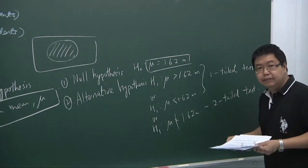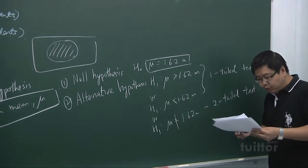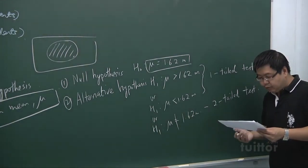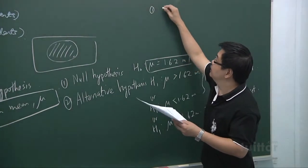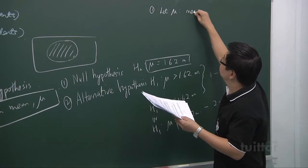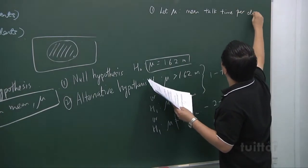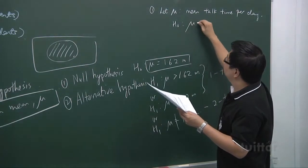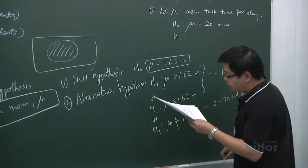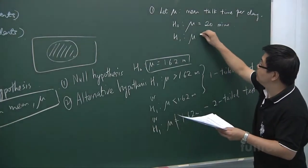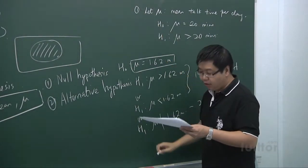Let's look at some examples. Kelly claimed that the average number of talk time used by phone users in Singapore is 20 minutes per day. Test whether this value is underestimated. We let mu be the mean talk time per day. The null hypothesis will be mu equals 20 minutes, and H1 is mu greater than 20 minutes, since we are testing whether this value is underestimated. This is a one-tail test.